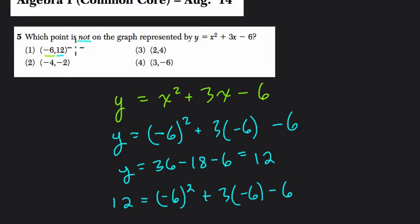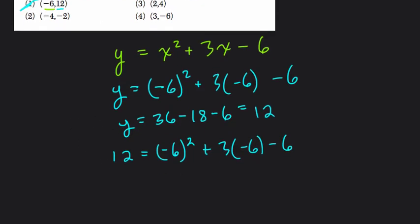Because we're looking for a point that's not on the line. We're looking for a point that doesn't balance the equation. So choice 1 is out. Let's keep going. Choice 3, I'm going to jump to because it has numbers 2 and 4, nice and friendly.